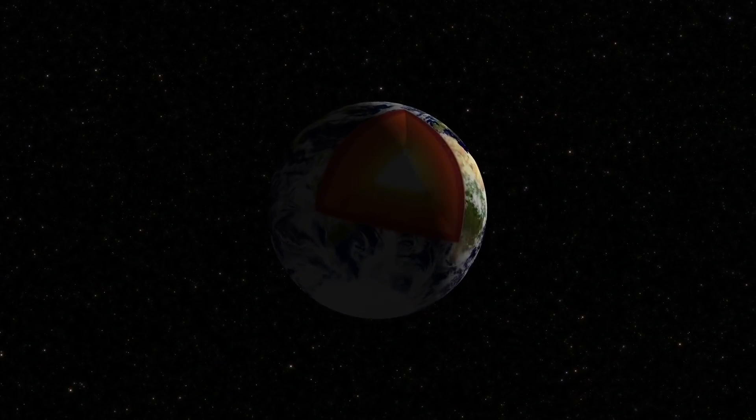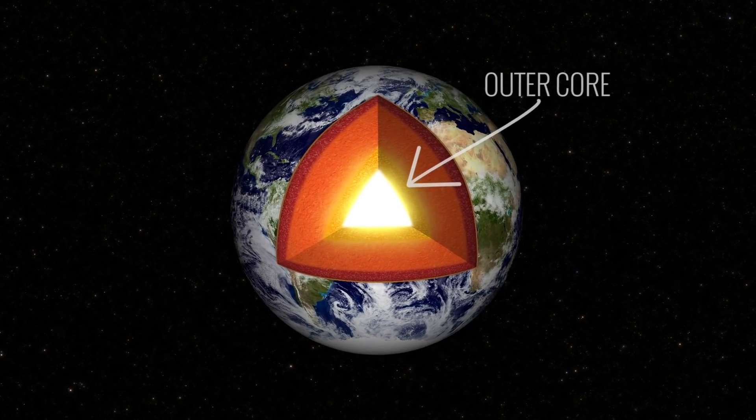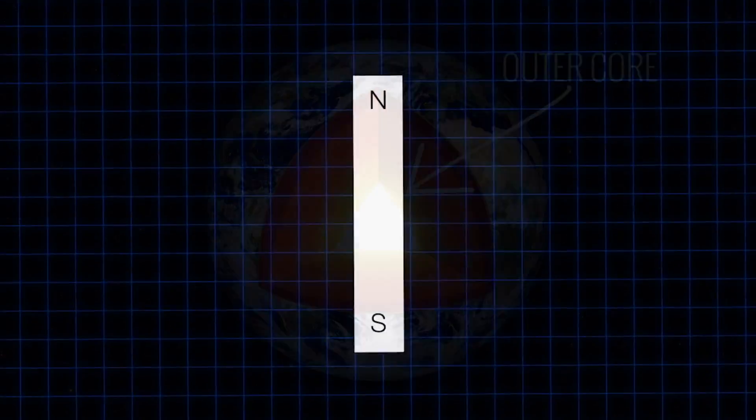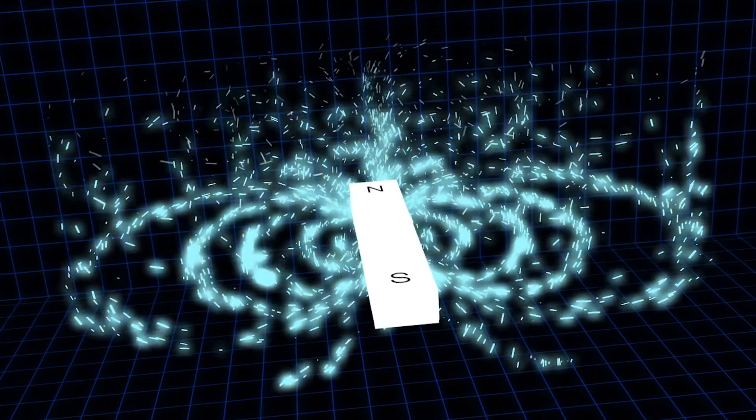The primary source of the magnetic field appears to be from molten iron moving around the core of the planet under enormous pressure, generating electrical currents, which in turn produces the magnetic field that encompasses Earth.